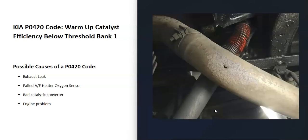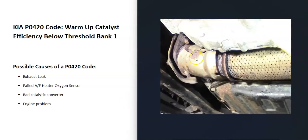The first thing to check for is any exhaust leaks, since an exhaust leak can throw these sensors off. This includes anywhere where the flanges are bolted together — there'll be gaskets inside, and if those gaskets blow out, it can let air in. When air gets in, it throws the reading off for the sensors. So first, be sure you don't have any exhaust leaks.